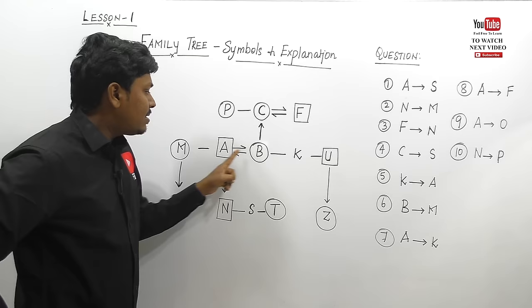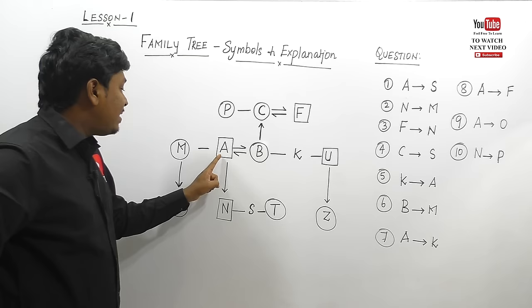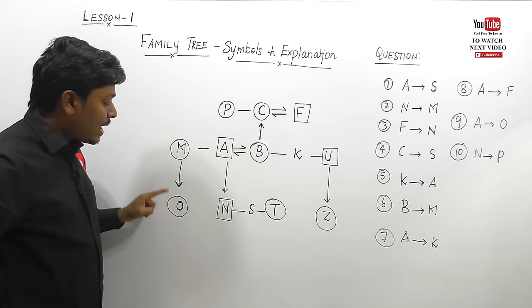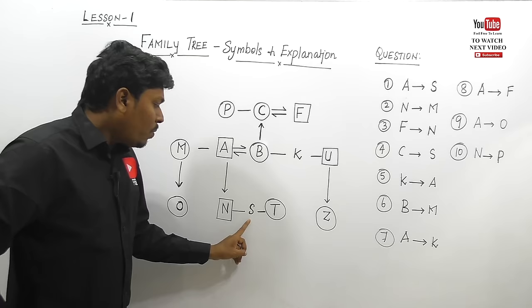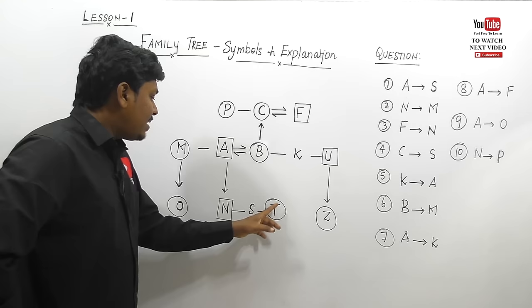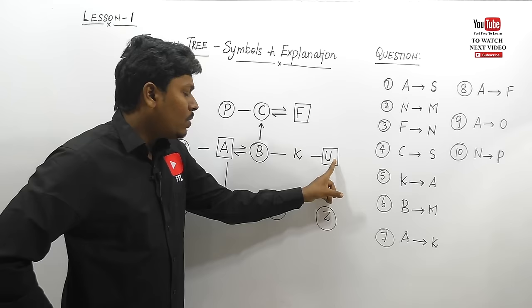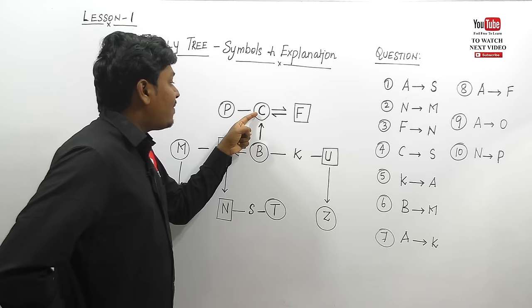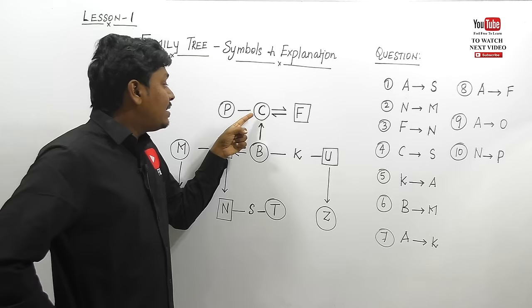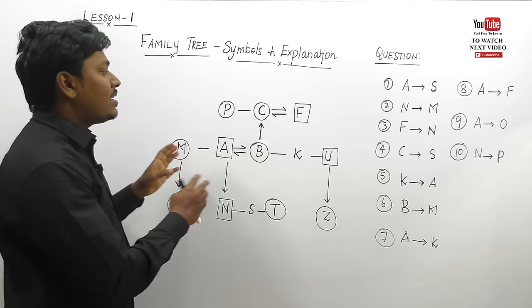A and B are husband and wife — A is male, B is female. A is having a sister M. M is having a daughter O — a circle so female. A is having a son N and a daughter T, and we don't know the gender of S. B is having a brother U, and U is having a daughter Z, but we don't know the gender of K. B is having a mother C and a father F — husband and wife. C is having a sister P.